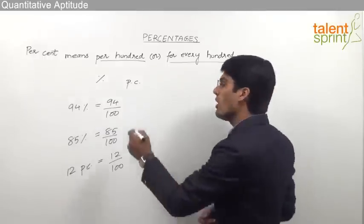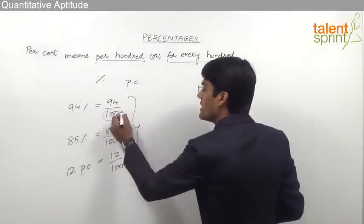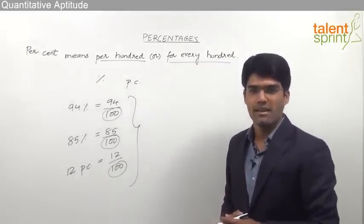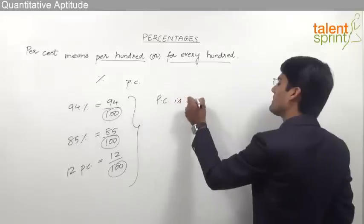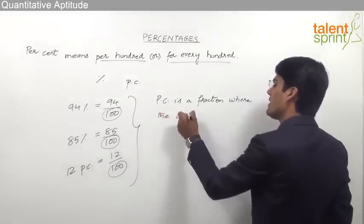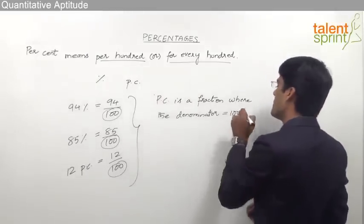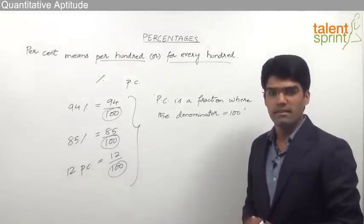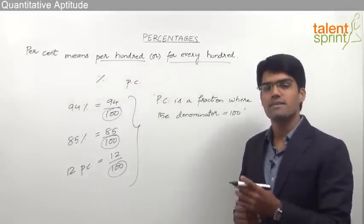From all these values you can see that percentages are nothing but fractions. Every percentage can be taken as a fraction where the denominator is always hundred. So another way of defining percentages: percentage is a fraction where the denominator is hundred and the numerator is called rate percent. This definition is an important point which will be used in various other topics.